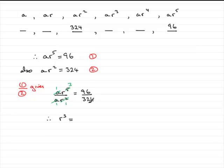But 96 over 324 cancels. You can reduce this down to 8 over 27. You can reduce it down to 8 over 27 if you divide top and bottom by 12.